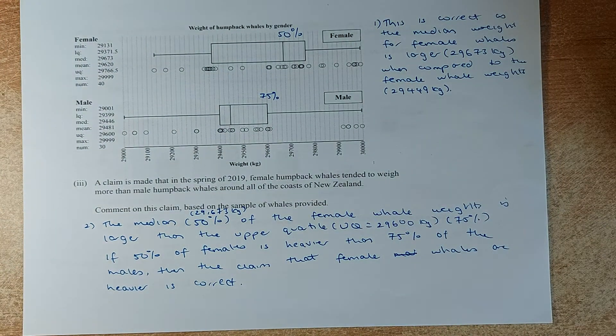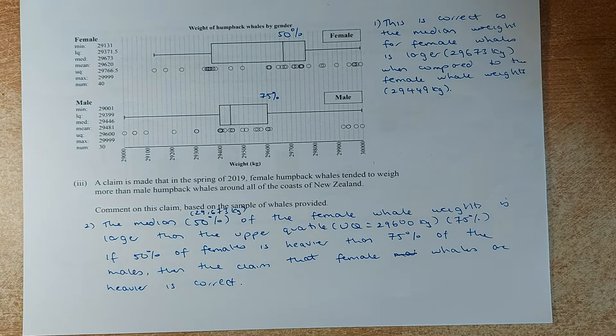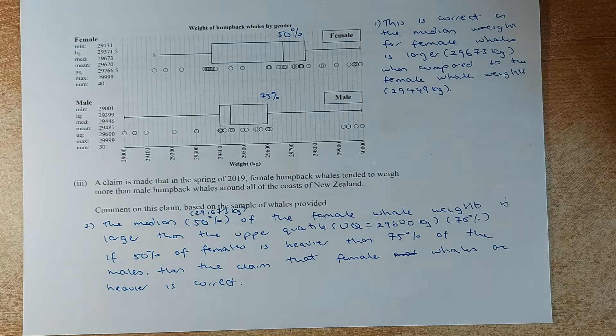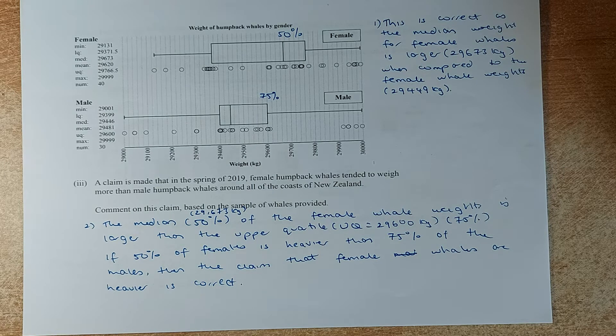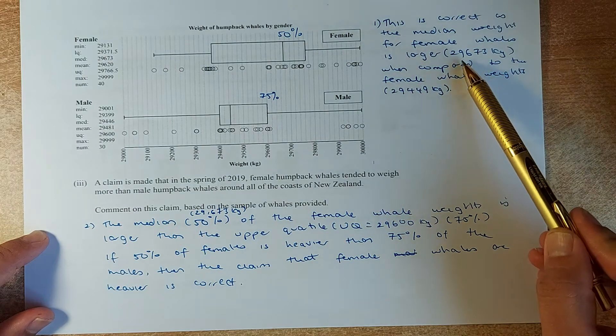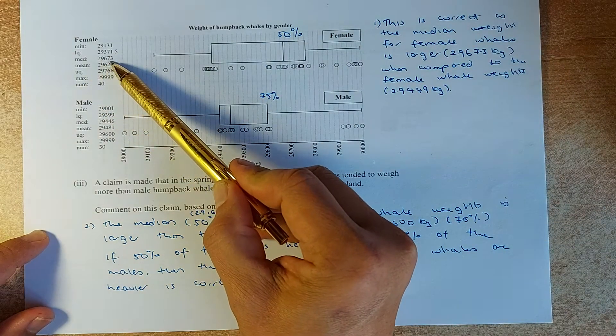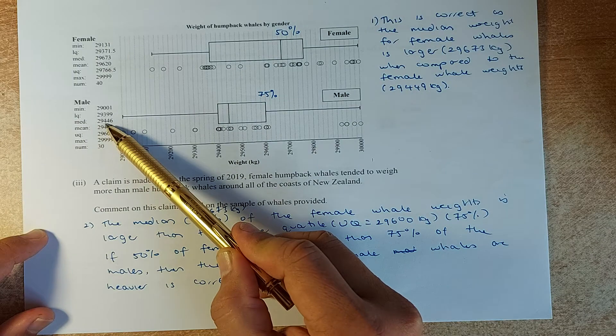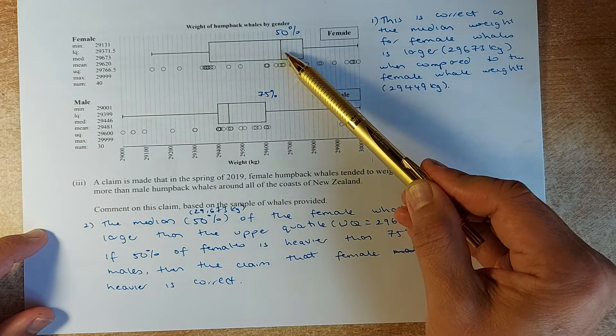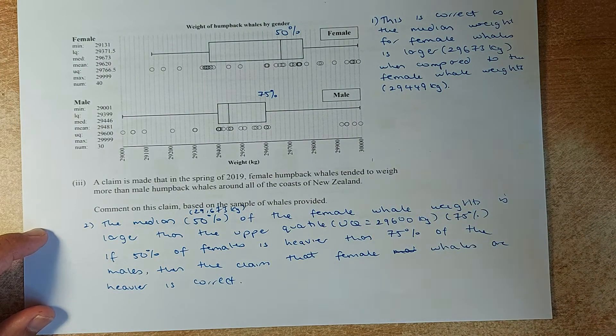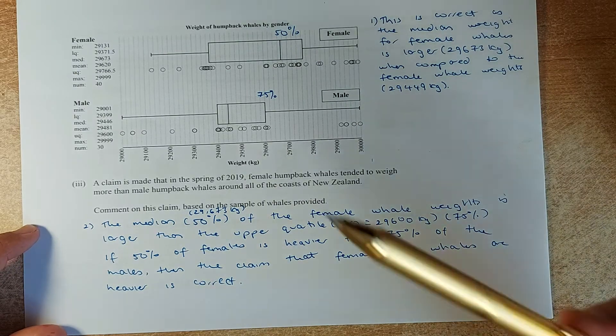They ask you, a claim is made in the spring of 2019 female humpback whales tend to weigh more than the male humpback around all the coasts of New Zealand. Comment on this claim based on the samples of whales provided. First, we compare the median. The median for female is around 29,673, and the median for male is going to be 29,446. So technically, the female has a bigger median than the male. That's why the female tends to weigh heavier than the male.